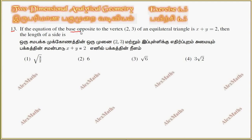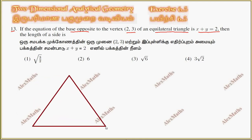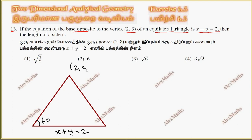If the equation of the base opposite to the vertex (2,3) of an equilateral triangle — the base equation is x plus y equal to 2. This is an equilateral triangle with 60 degree angles, and this vertex is (2,3).